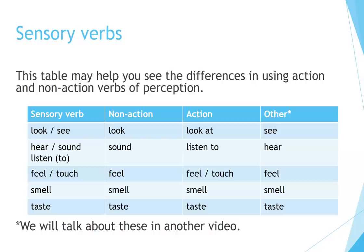This table summarizes the differences between action and non-action uses of sensory verbs. Look/see: non-action use is 'look'; action use is 'look at'; other is 'see.' Hear/sound/listen to: non-action is 'sound'; action is 'listen to'; other is 'hear.' Feel/touch: non-action and action both use 'feel.' Smell: non-action and action both use 'smell.' Taste: non-action and action both use 'taste.' More details will be covered in another video.